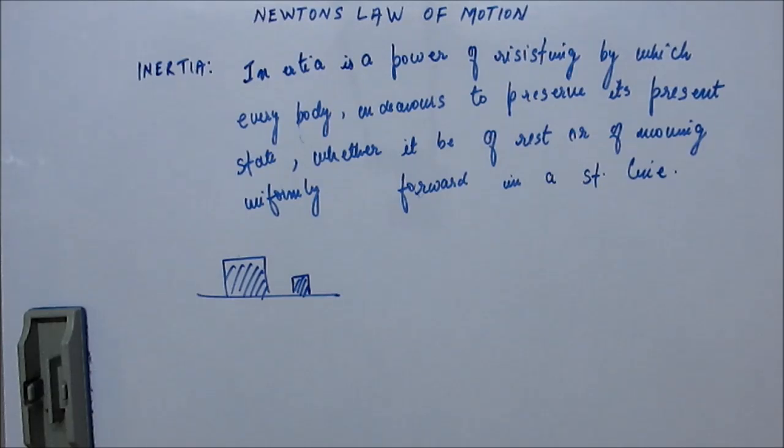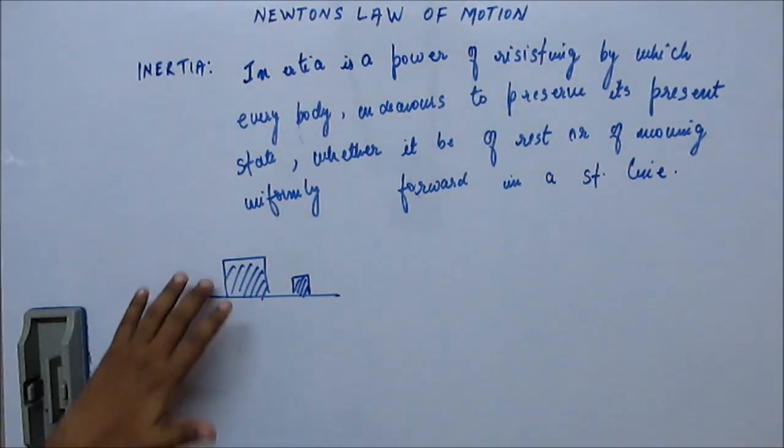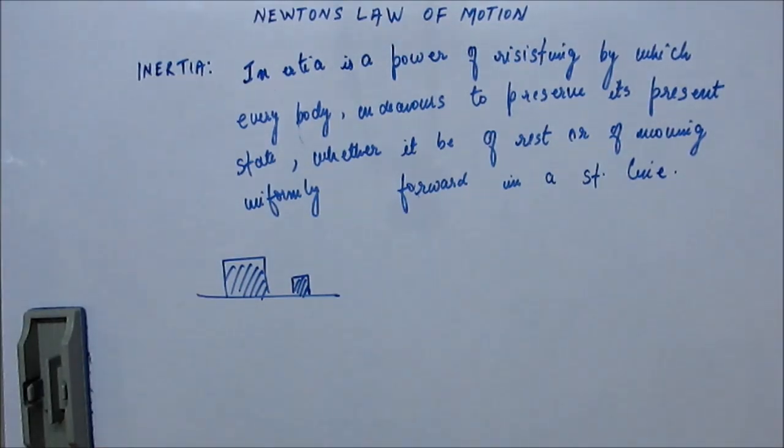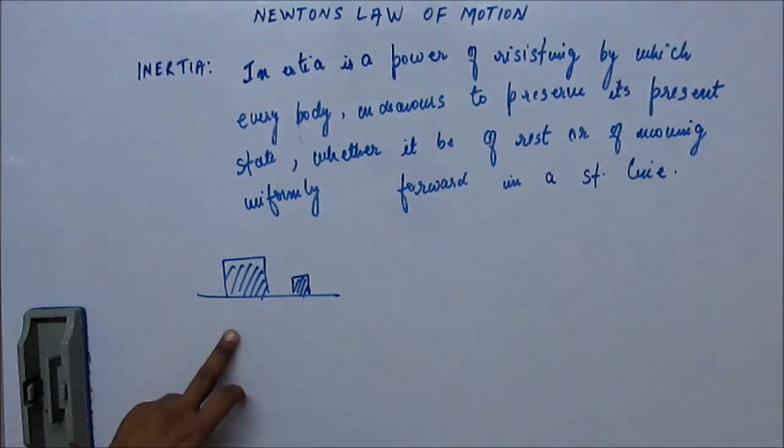Because if both of them are at rest, then this block requires more amount of energy from our side to bring it in motion compared to this one. So, this has more inertia. This has more resistance to come in motion and once it has come in motion, then it has more resistance to stop. It has more resistance to... It has more inertia to be in the state of motion. So, a heavier block will have higher inertia.